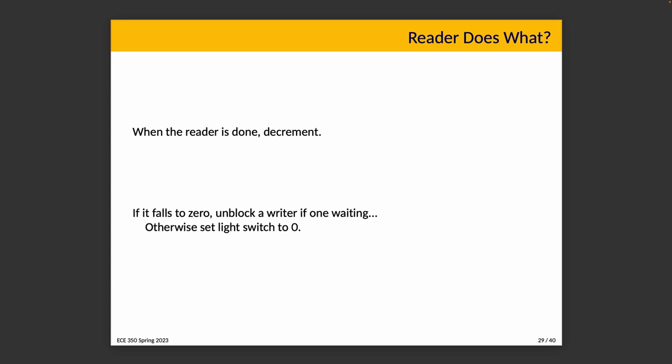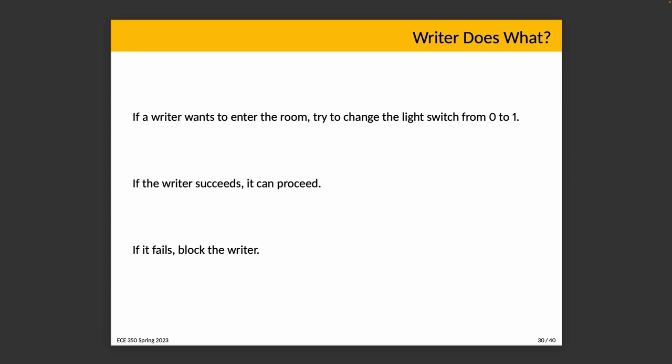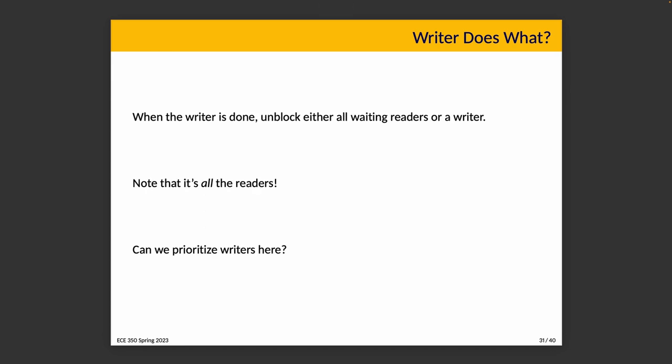When the reader is done, decrement the count of readers. If the reader count falls to zero, unblock a writer if one is waiting; otherwise set the light switch to zero. For a writer wanting to enter, try to change the light switch from zero to one. If the writer succeeds, it can proceed; otherwise block the writer. The only situation in which it fails is because there are readers or another writer ahead of it, so the writer gets blocked unconditionally if the lights are already on.